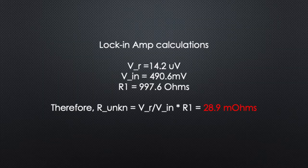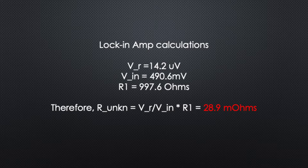Here are the calculations for the lock-in amp resistance. VR was 14.2 microvolts approximately, VIN was 490.6 millivolts, R1 was 997.6 ohms. Therefore, R unknown from our calculation formula earlier came out to be 28.9 milliohms. We'll compare this with a couple of other measurements we do later on.